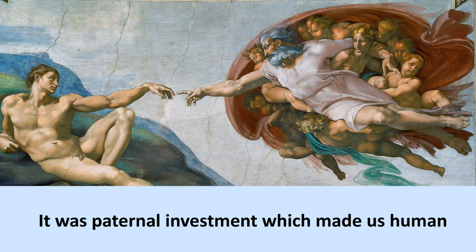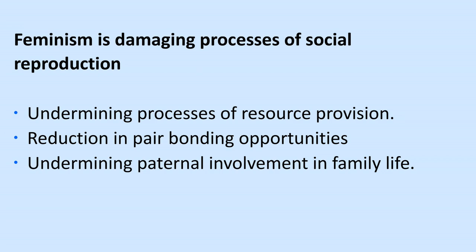Now where's the problem? Feminism doesn't look at all these different processes of natural selection. It has a different set of ideologies, and I'm going to show that these are actually undermining many of the processes which facilitate social reproduction. Firstly, it undermines the process of resource provision. It also reduces pair bonding opportunities and undermines paternal investment in family life.